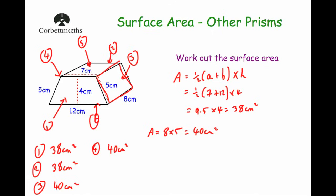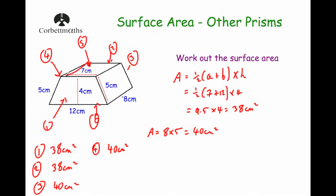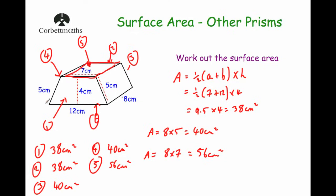Face number five is the top of the trapezoid prism. The top is a rectangle that is 7 wide and 8 long. Area equals 8 times 7, which equals 56 centimeters squared. So the area of the top is 56 cm².